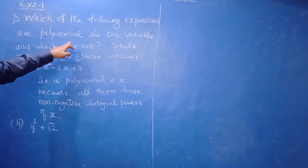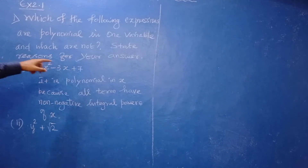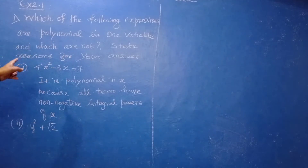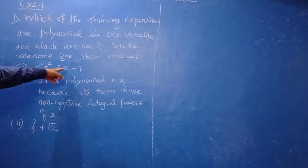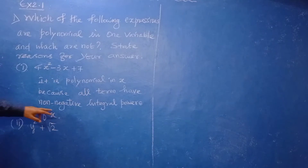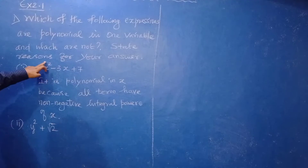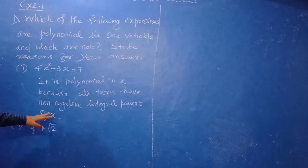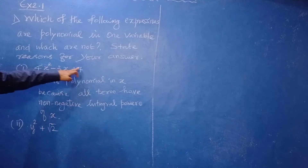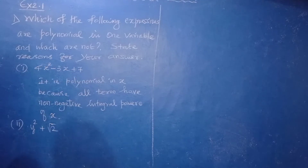Now Exercise 2.1. Which of the following expressions are polynomials in one variable? First: 4x squared minus 3x plus 7 — it is a polynomial in x, because all terms have non-negative integral powers of x, that is, whole number powers.